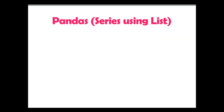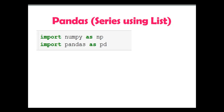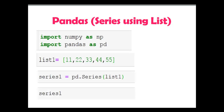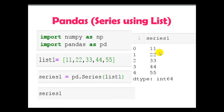First, pandas series using a Python list. Here I have imported numpy as np and pandas as pd. In place of np and pd you can use any string, but this is the professional way to import the different libraries. I have created a Python list with 5 values: 11, 22, 33, 44 and 55. Using the pandas Series method — note that 'S' is capitalized — and passing list1, the pandas series is displayed. Indexes are automatically created by pandas.